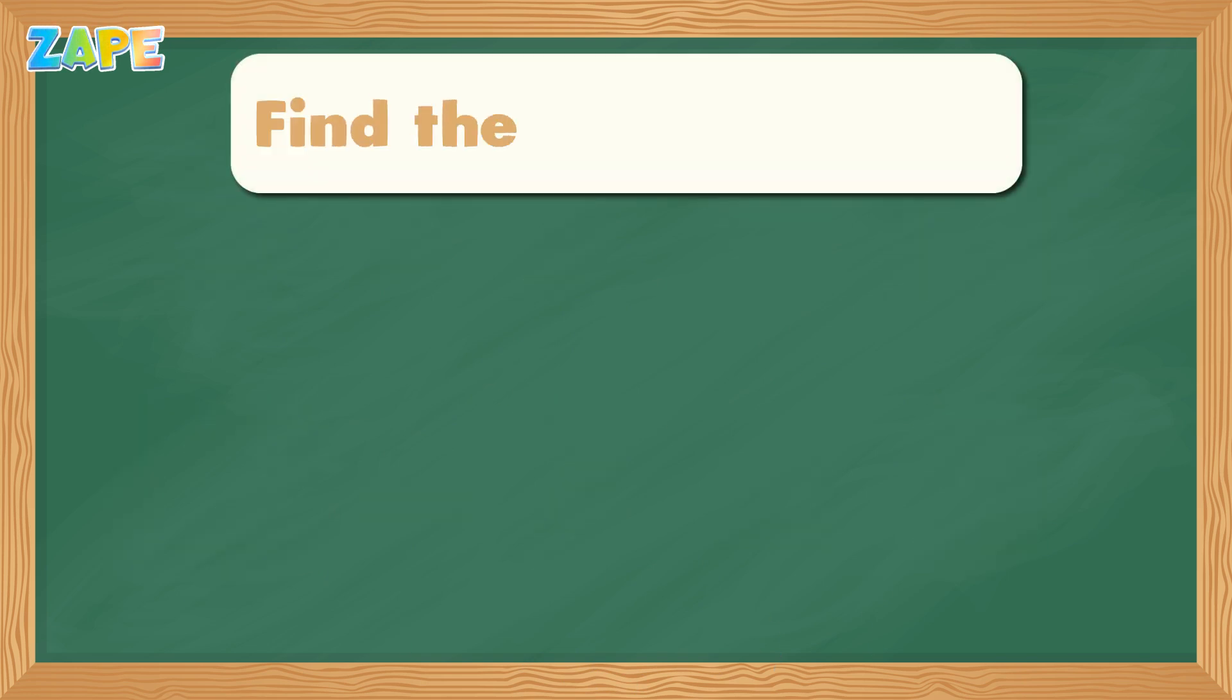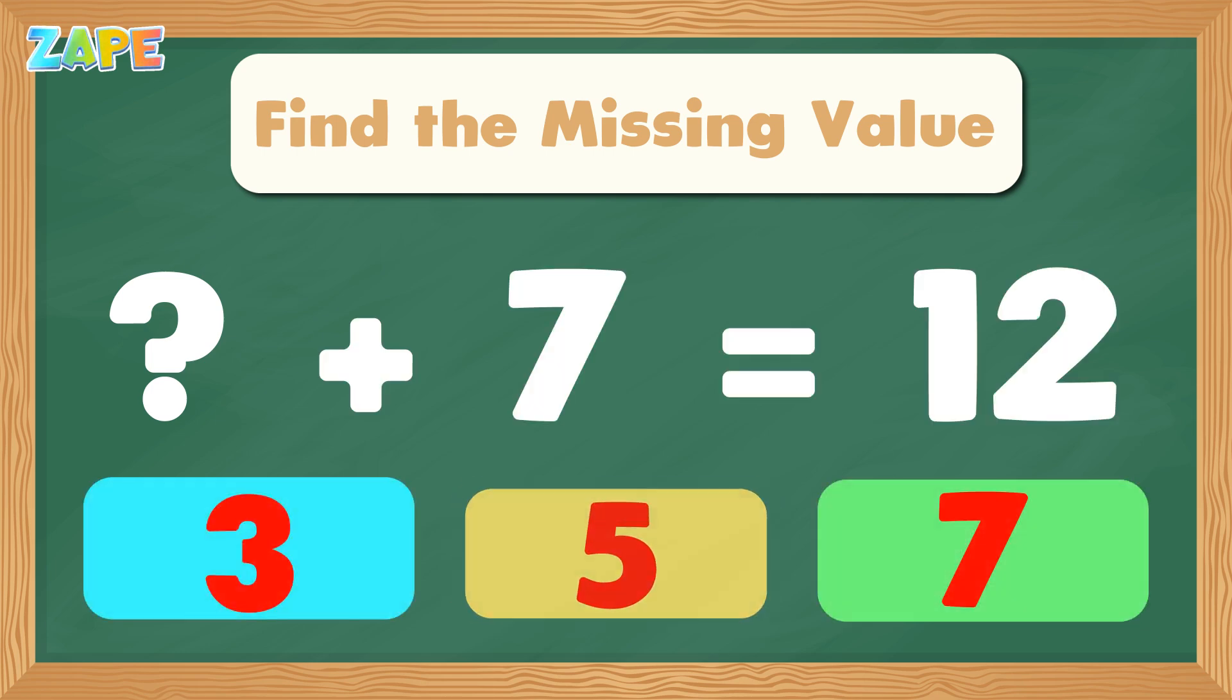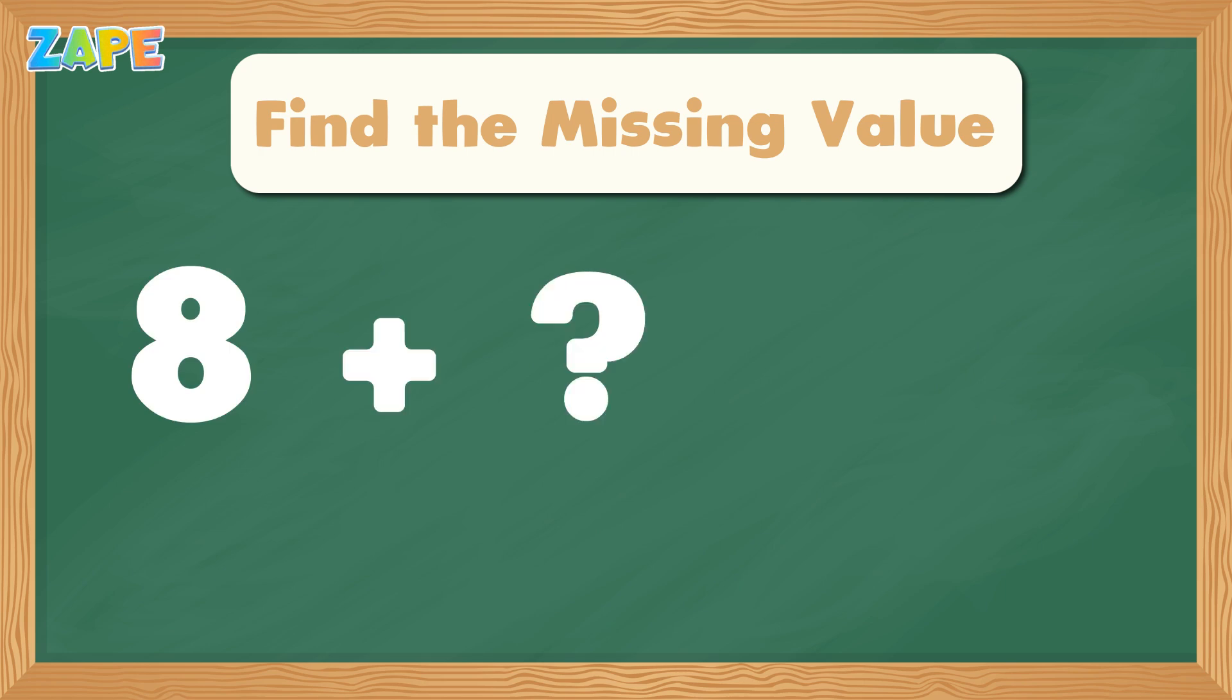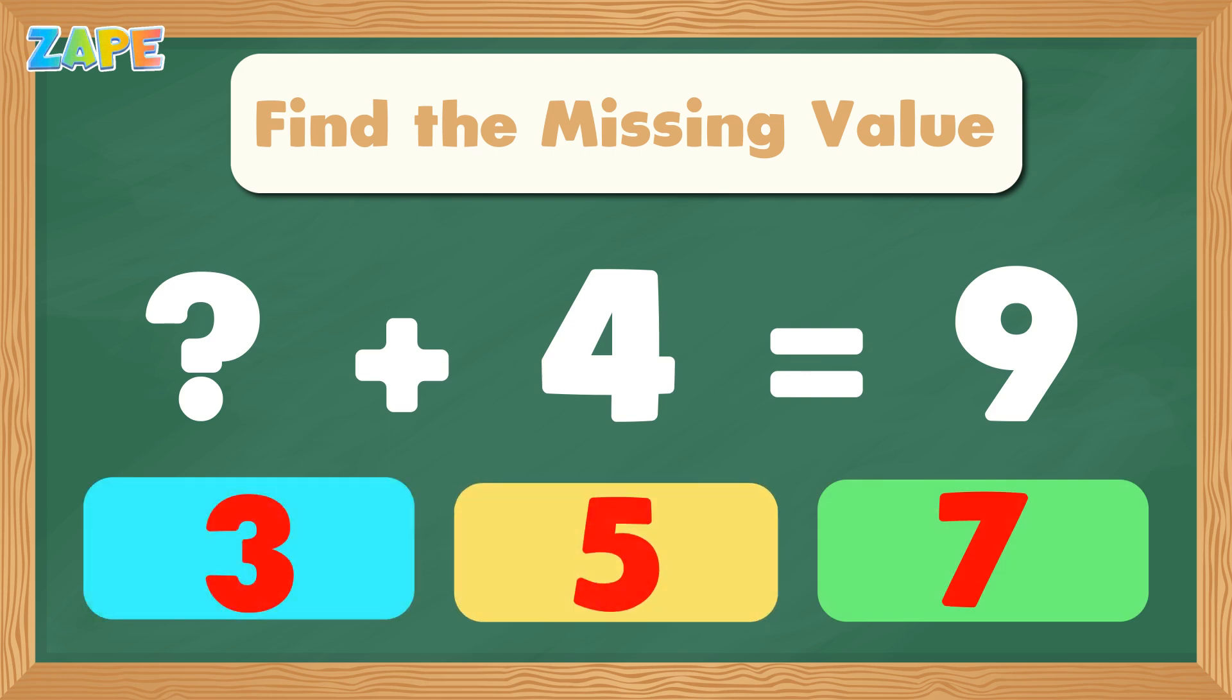Let's practice. Now it's your turn. Missing value plus 7 equals 12. The answer is 5. 8 plus missing value equals 11. The answer is 3. Missing value plus 4 equals 9. The answer is 5.